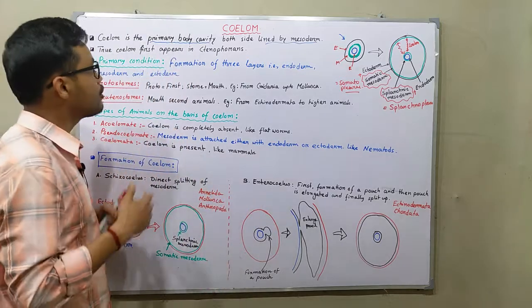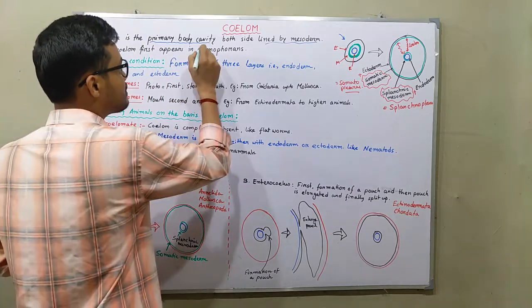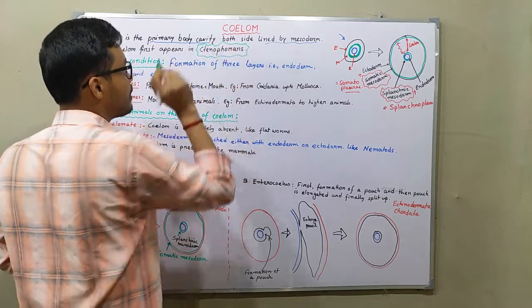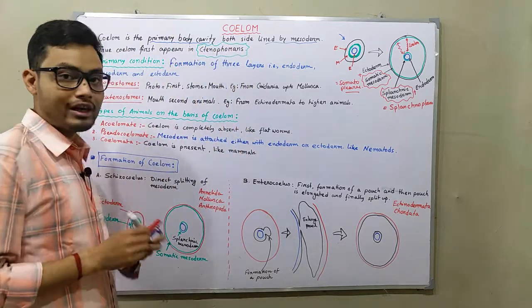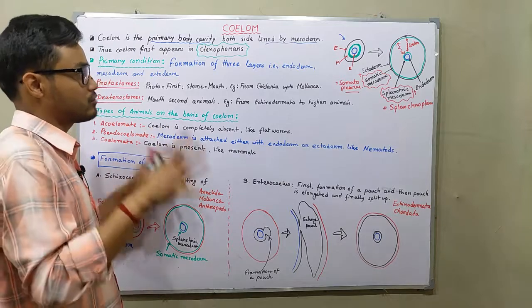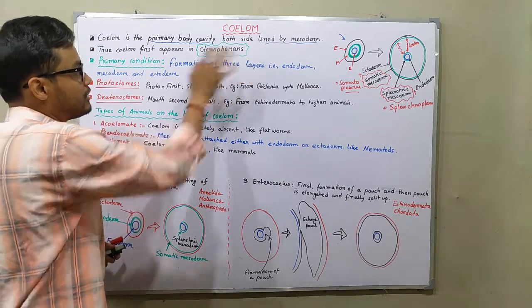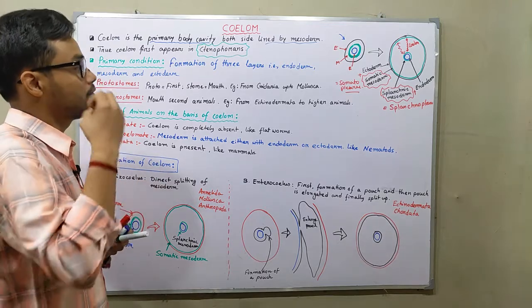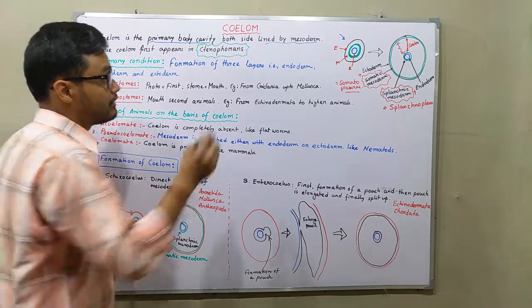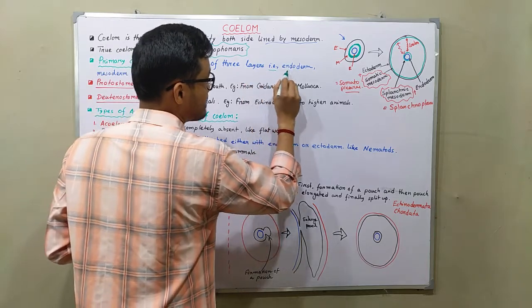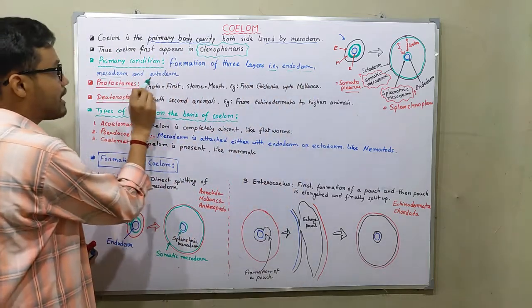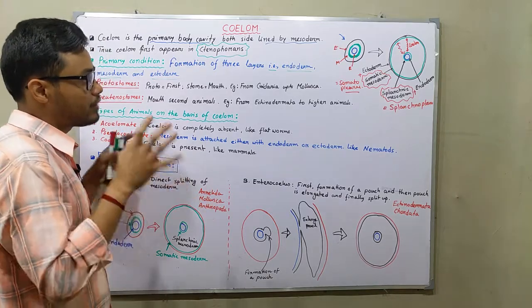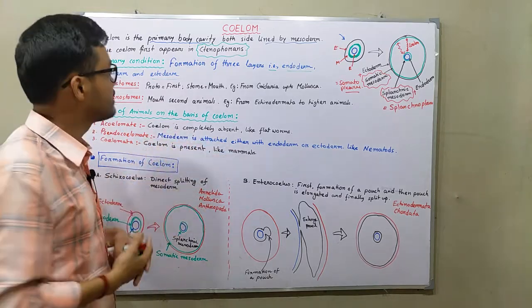True coelom first appears in annelids. That means the primary body cavity, both sides lined by mesoderm, first appeared in annelid animals. The primary condition for formation of coelom is that three germ layers must be present: endoderm, mesoderm, and ectoderm. All three germ layers together make the coelom.